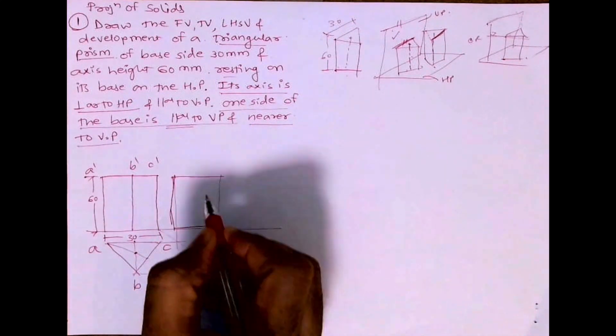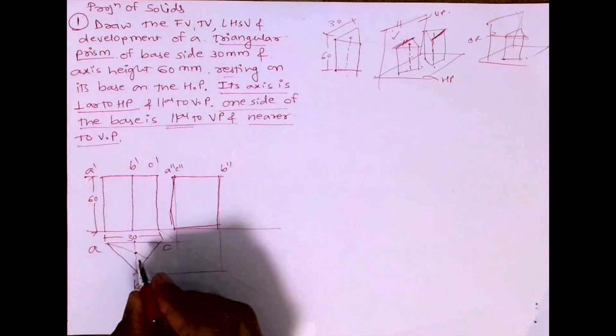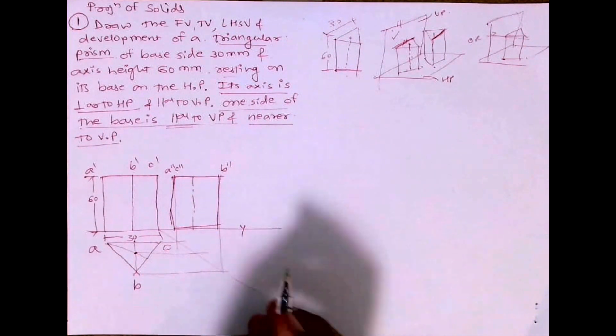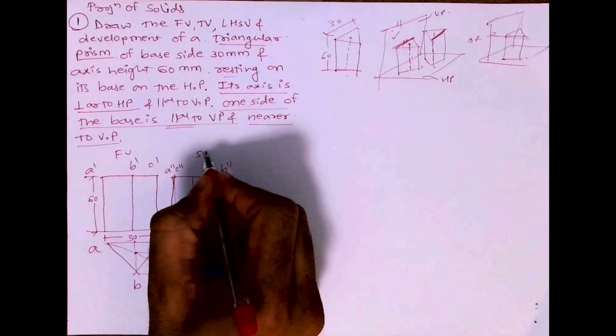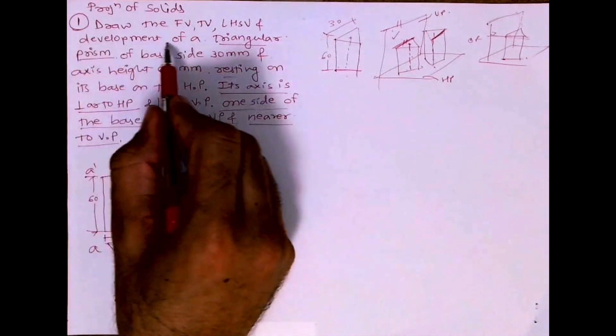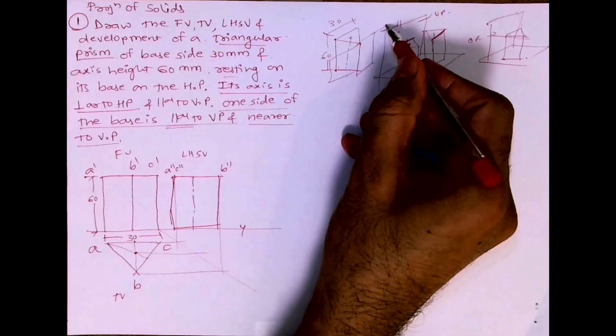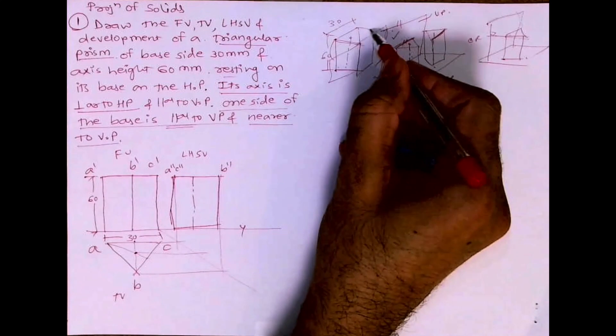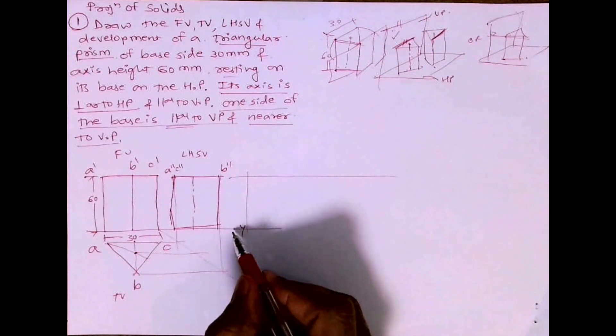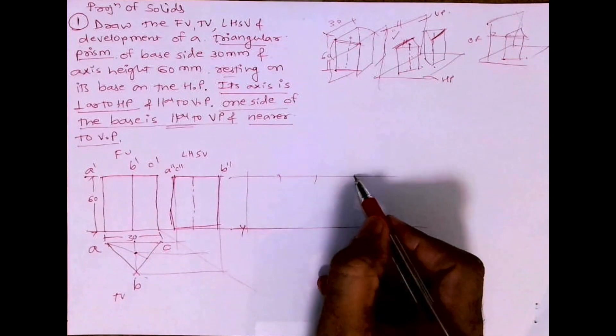This is side view. So you draw vertical line, take A to B, you cut B to C and C to A. Three times you cut.